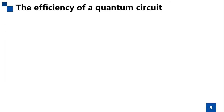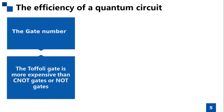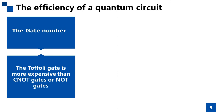There are several ways to measure the efficiency of a quantum circuit. First, we can compare the number of Toffoli gates. However, due to the physical realization of a quantum computer, Toffoli gates are much more expensive than the other quantum gates. As a result, the number of Toffoli gates is an important concern in this paper.